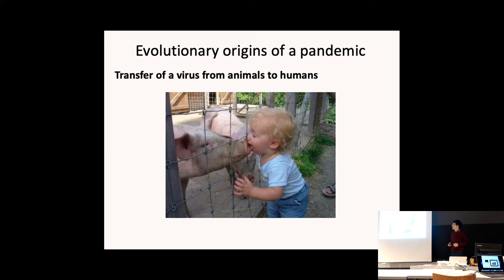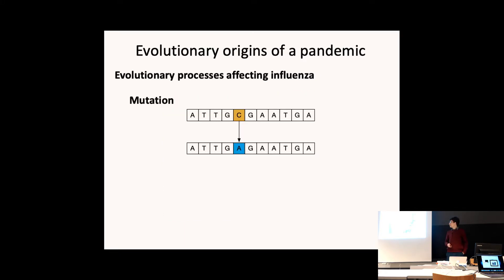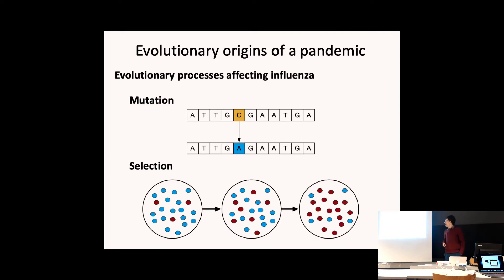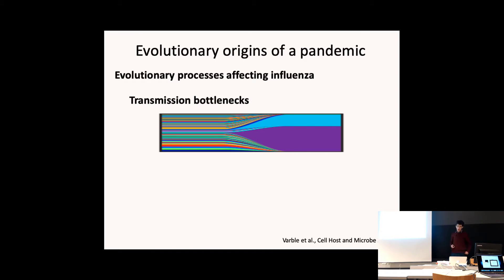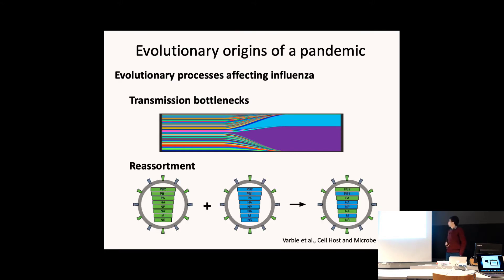If we think about evolution, we can break it down into different components. One is mutation: an organism with a genome can acquire a mutation from one nucleotide to another, which can lead to a change in the behaviour of the virus. Another is selection — some organisms will grow faster or spread from one person to another more efficiently. We then have transmission bottlenecks, where maybe only one or two viruses are actually transmitted to the next host. And a final one is reassortment.